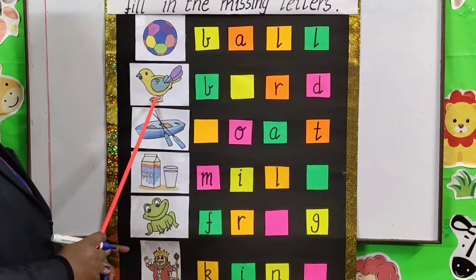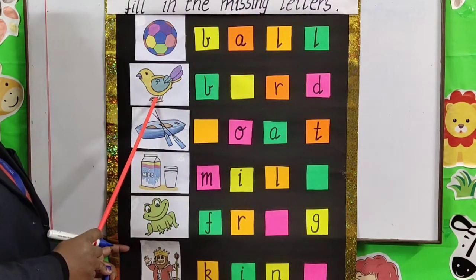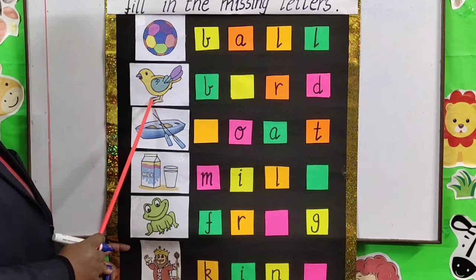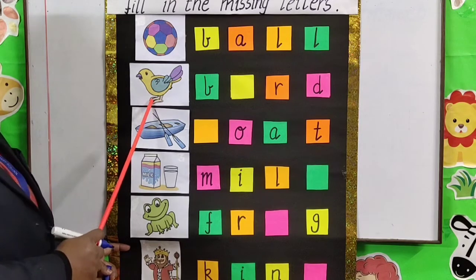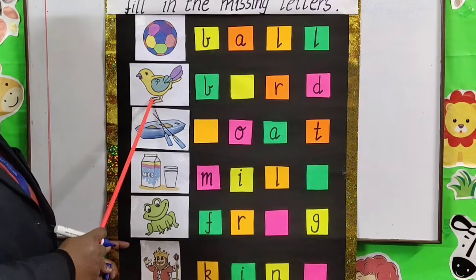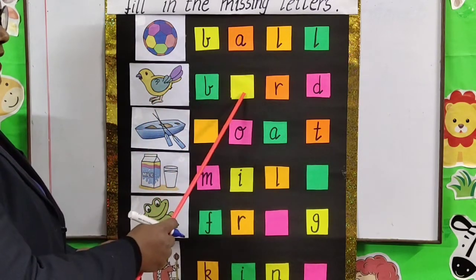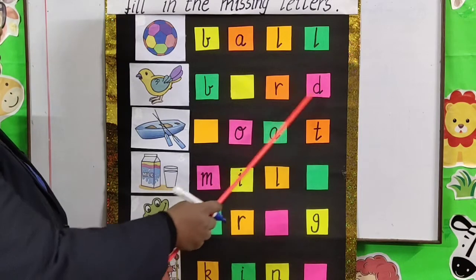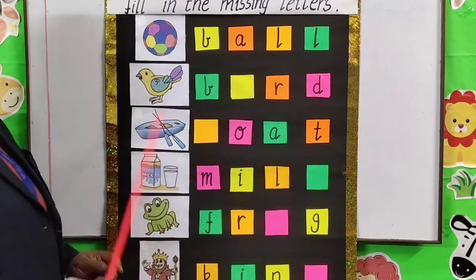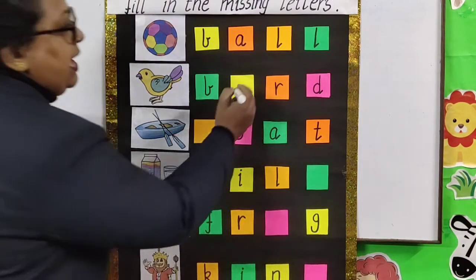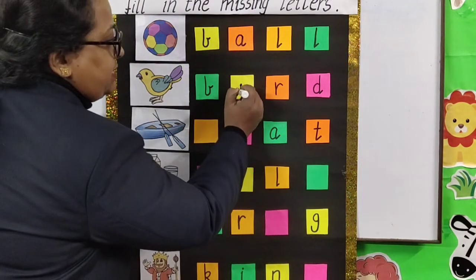Next picture. It is a picture of a bird. And what is the spelling of a bird? B-I-R-D. Missing letter? I. Correct.